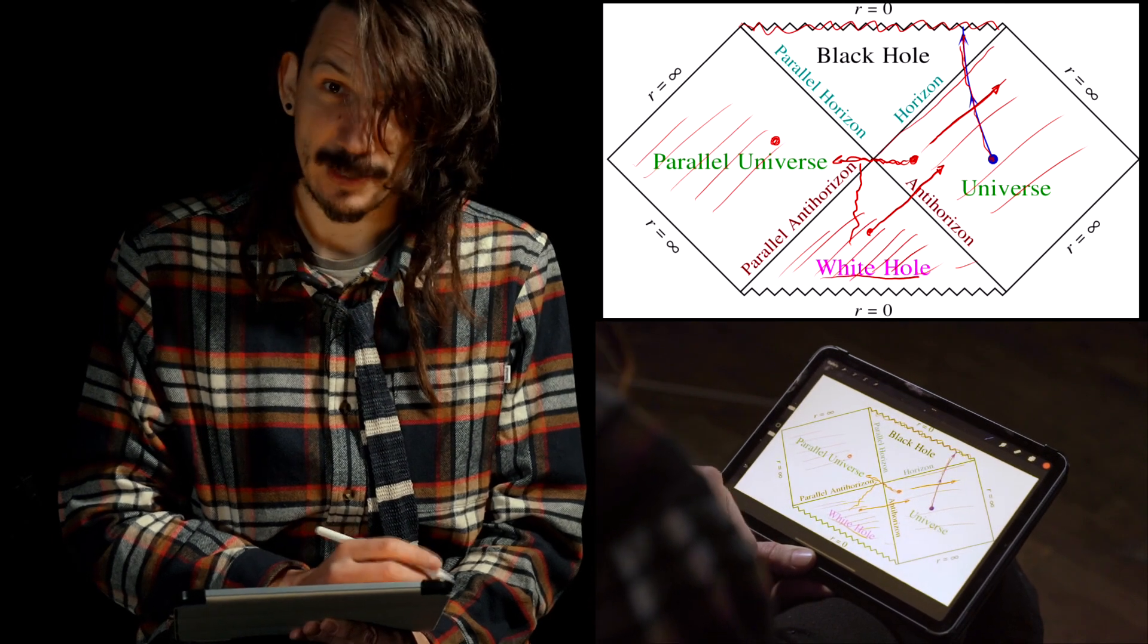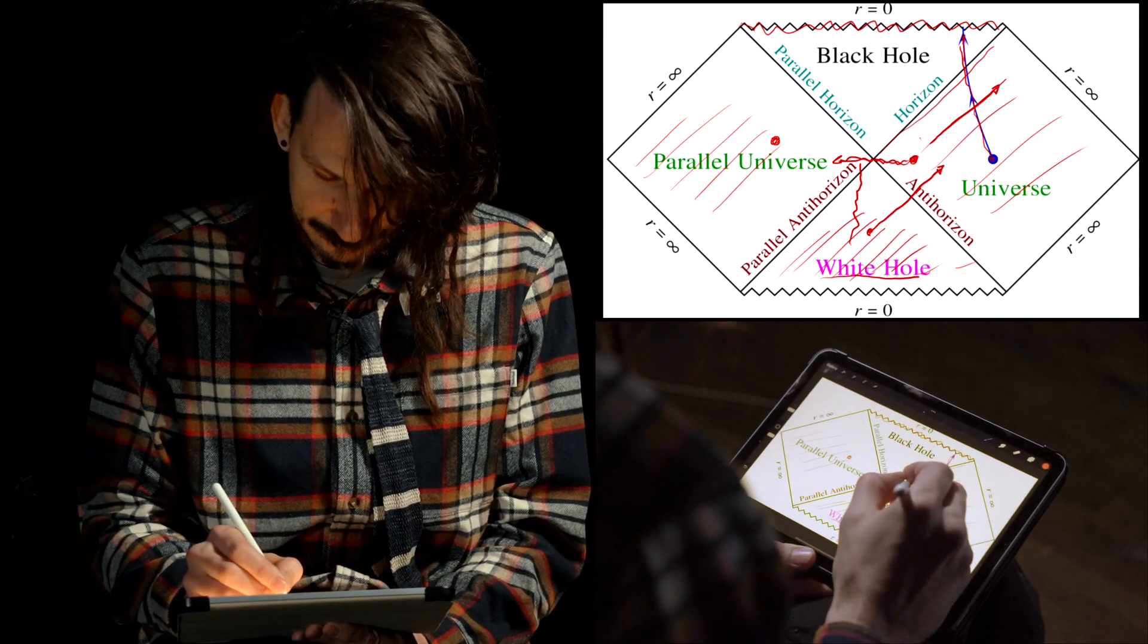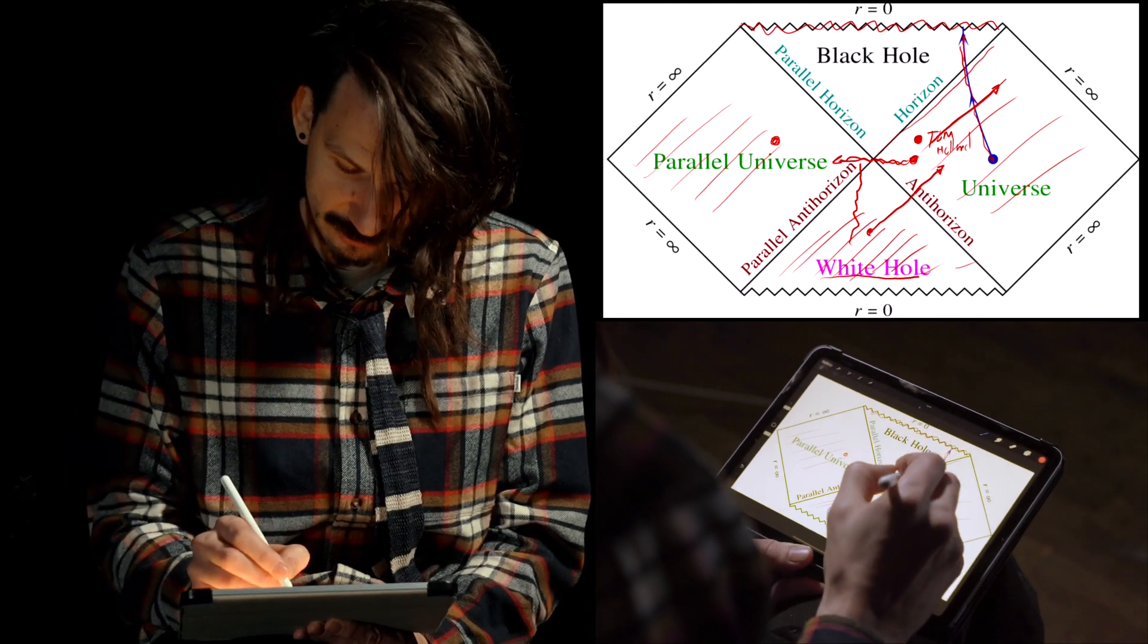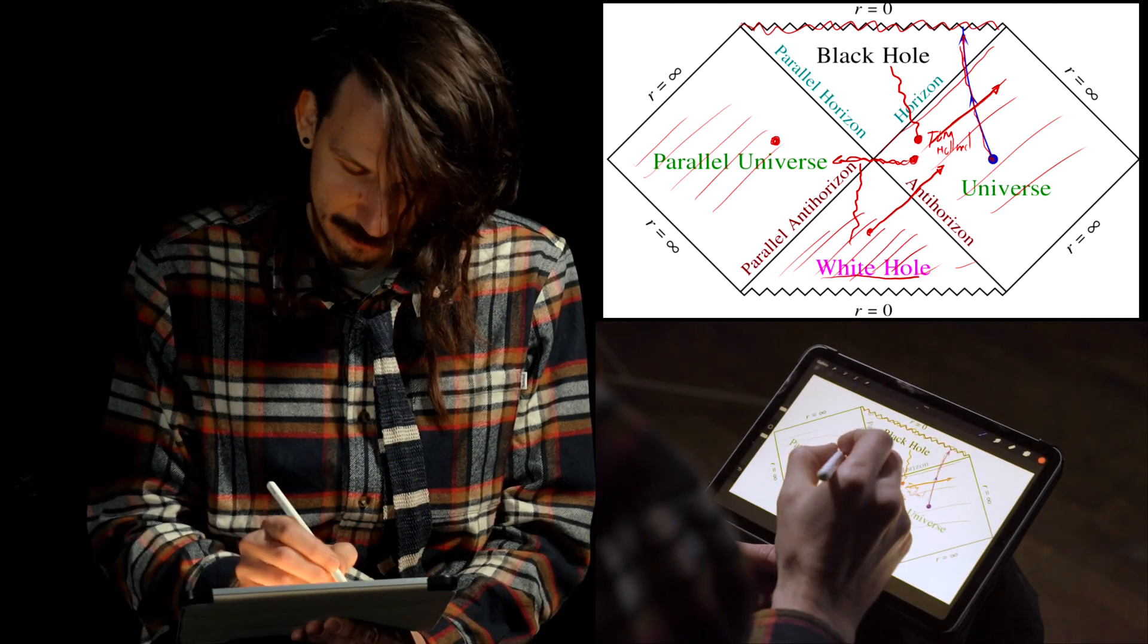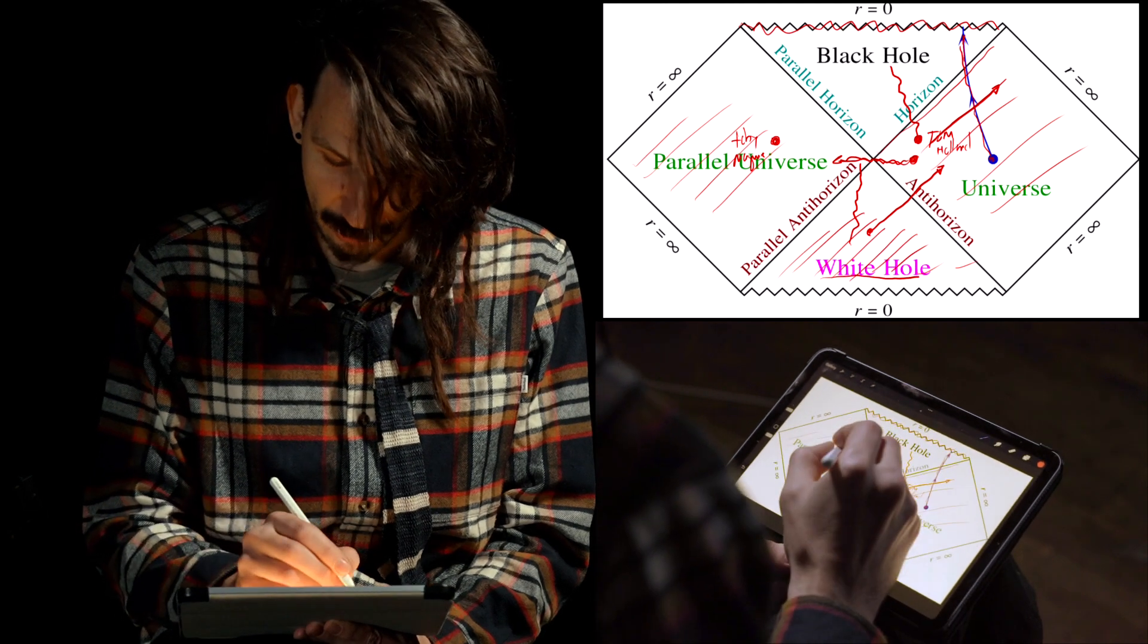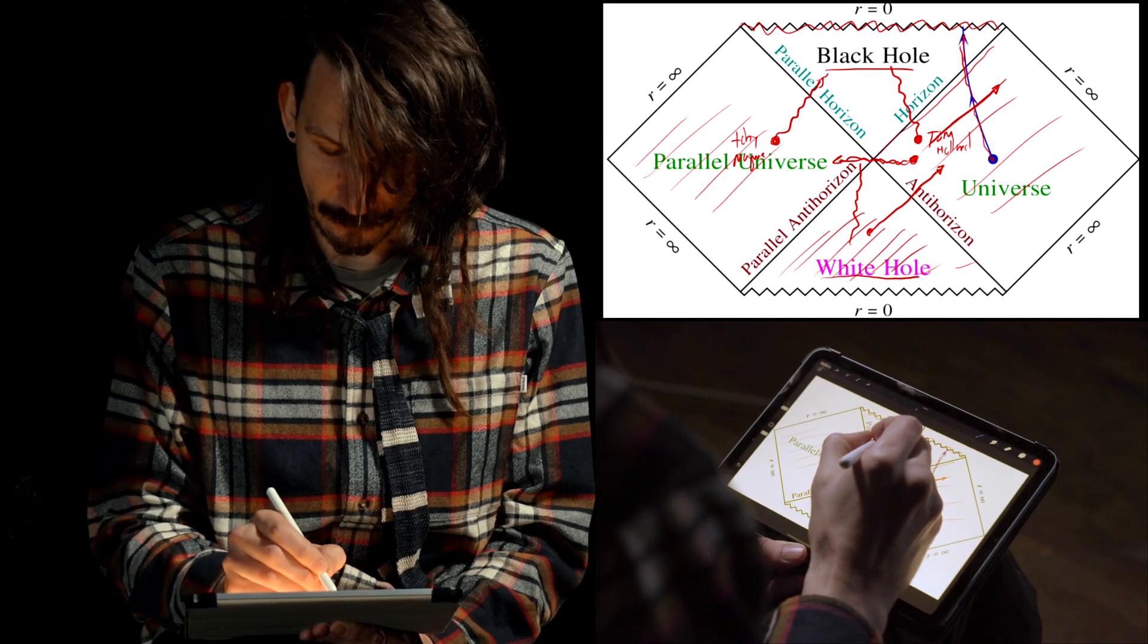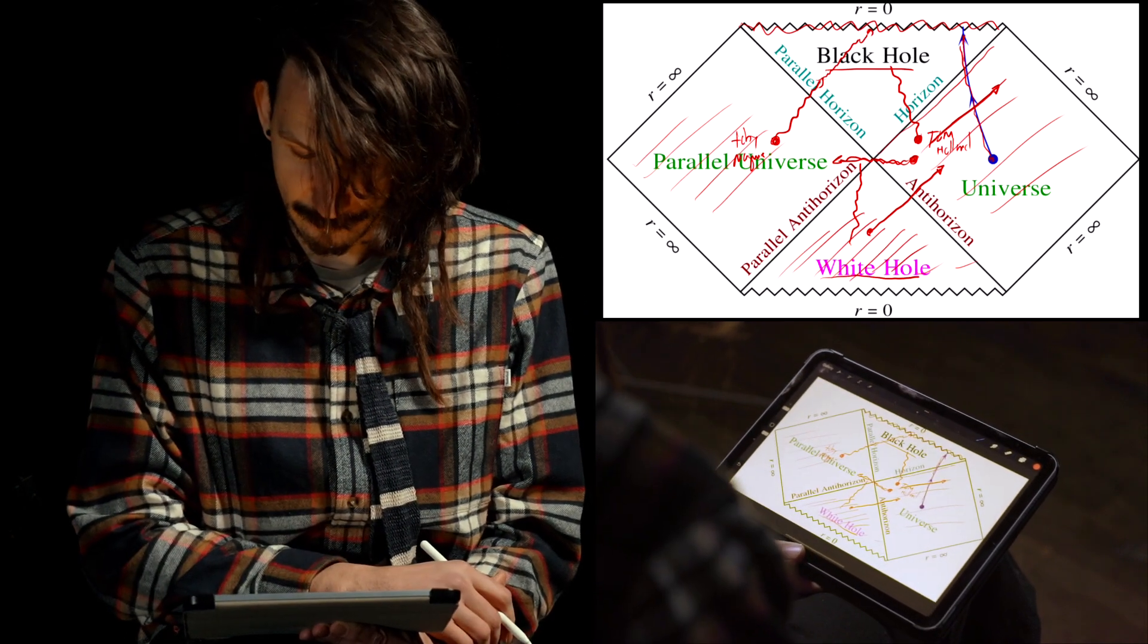But if this parallel universe actually existed, you can imagine being some person here, for instance, Spider-Man Tom Holland here, and Tom Holland decides to cross the event horizon in this way. And perhaps in the parallel universe you have another Spider-Man, Tobey Maguire here, who also decides to cross the event horizon in a different way. The two Spider-Mans could actually meet in the black hole region before they reach their ultimate fate, which is the singularity, where they would supposedly die.